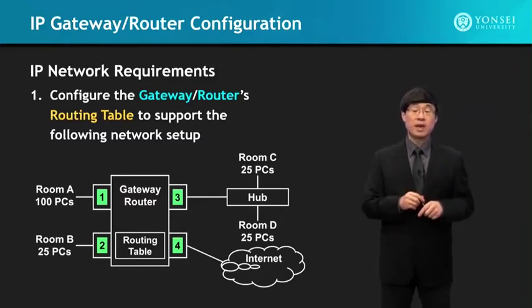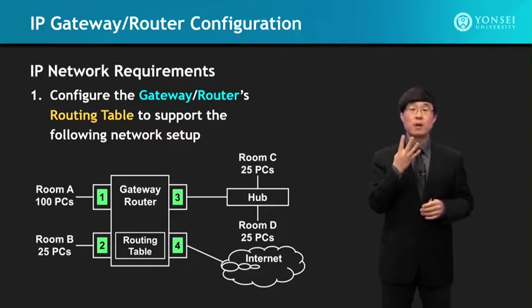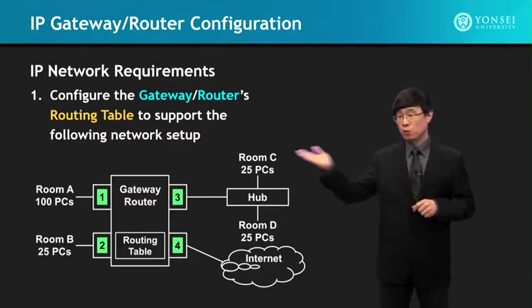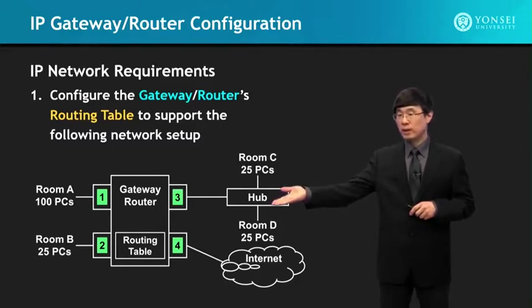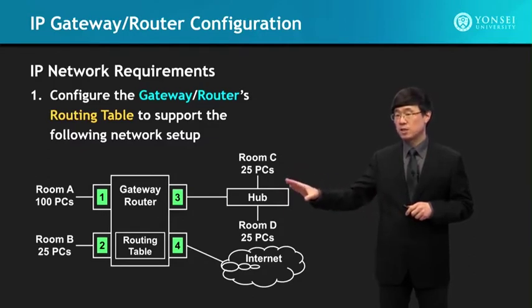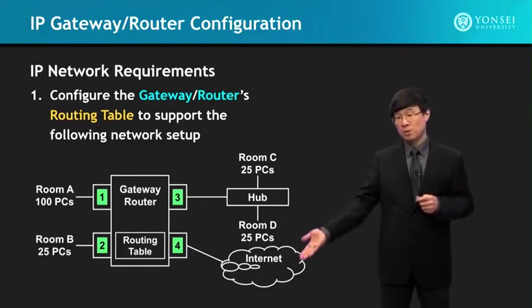For our gateway, we're going to assume four ports. Port 1 connects to room A with 100 PCs. Port 2 connects to room B with 25 PCs. Rooms C and D are each connected to a switch or hub with 25 computers each, and that connects to interface port 3 of the gateway. The Internet is connected to interface 4. We're going to set up the routing table in the middle of the gateway, and by that I think you'll have a real good understanding of the subnet, IP addresses, and the other configurations about how the Internet actually works.